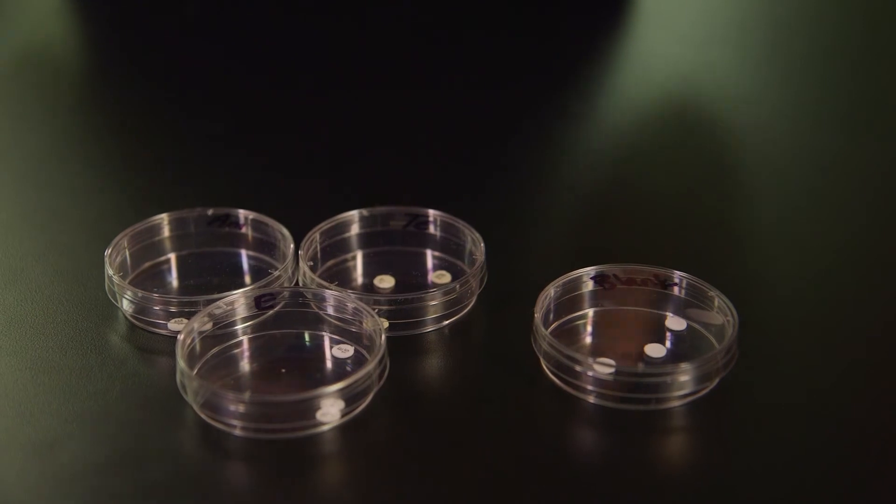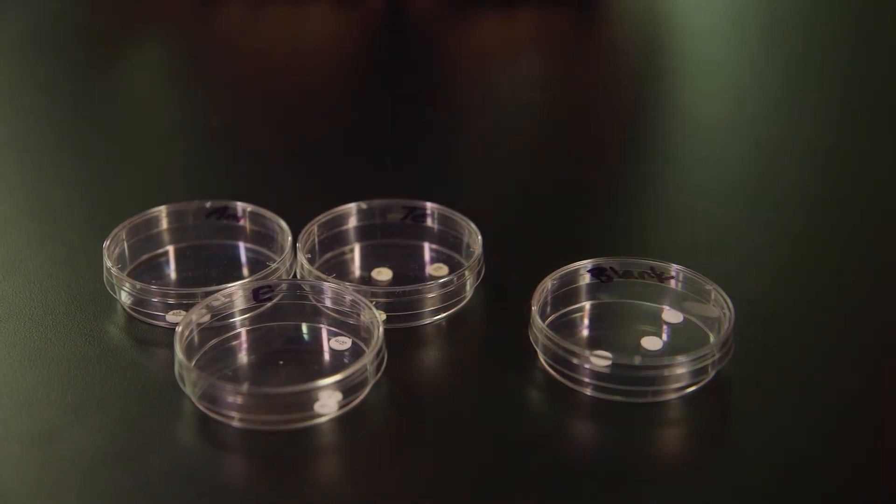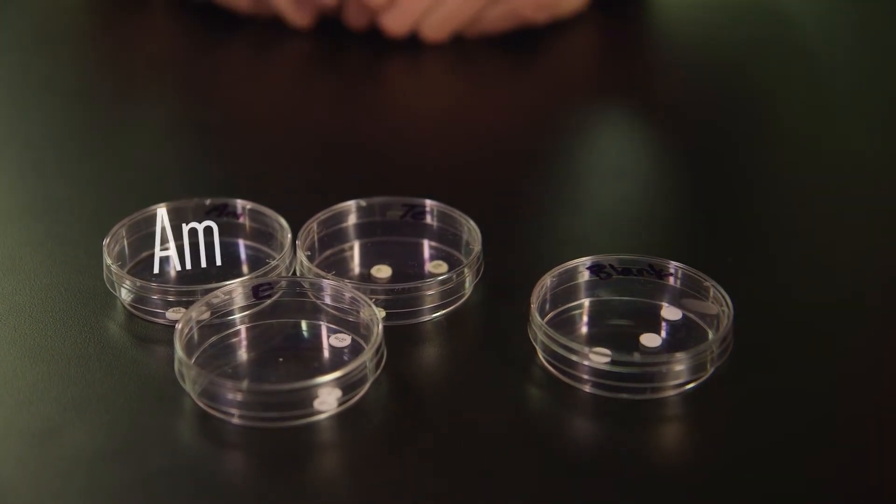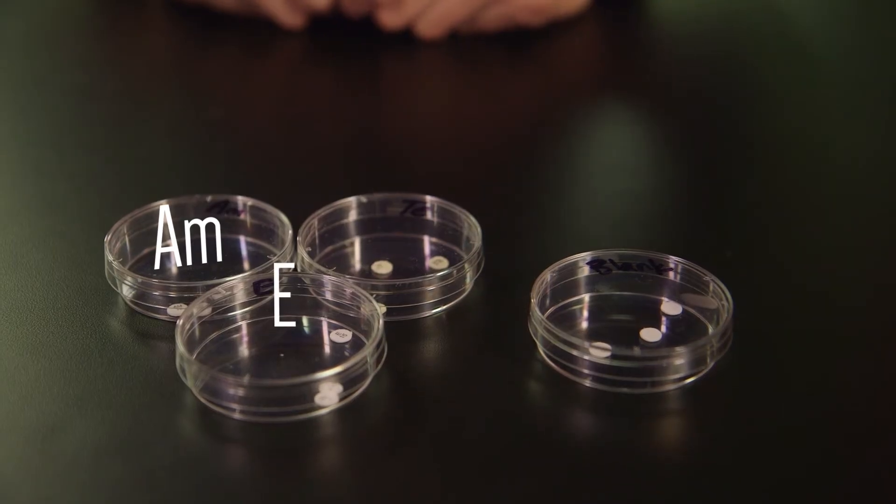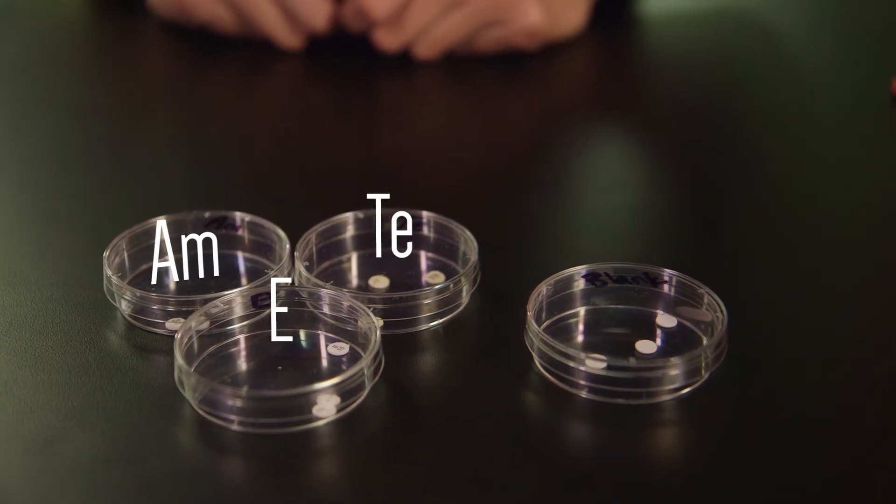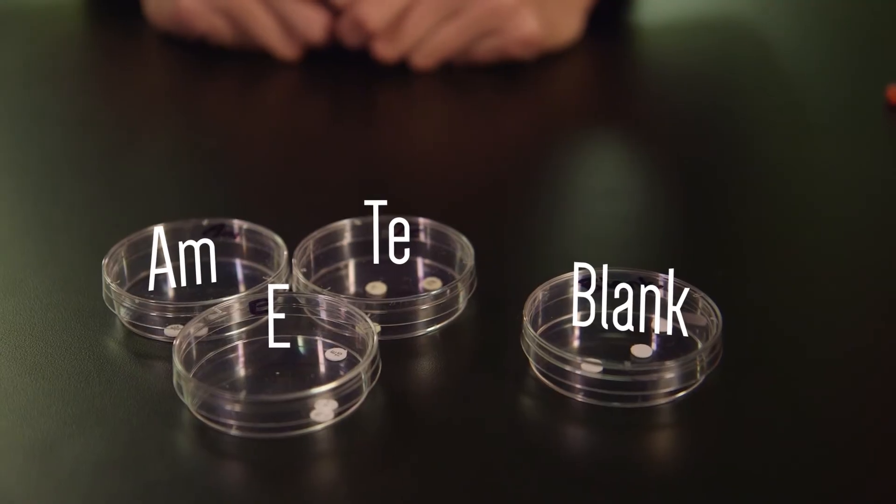Each of these sterile petri dishes contains a different antibiotic labeled with the initials of the antibiotic: AM for ampicillin, E for erythromycin, NTE for tetracycline. A fourth petri dish contains blank discs.